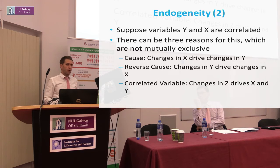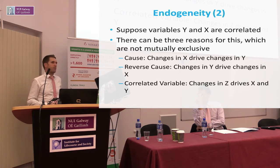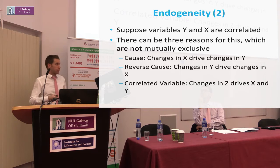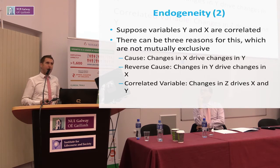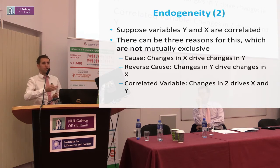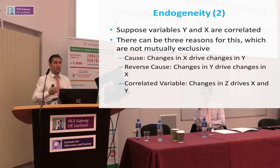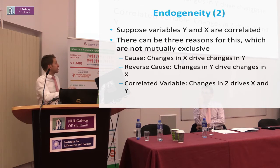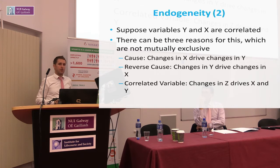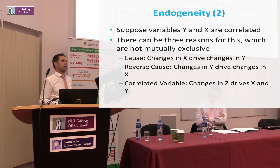Most importantly, you need to take account of the fact that there are likely other factors — call them Z — such as education, which co-determine both income and health. If you just look at the simple relationship between income and health and conclude that changes in income drive changes in health, without considering all three possible reasons for that correlation, you'll end up with endogeneity problems — and that will lead you to make incorrect inferences about the impact of income on health.